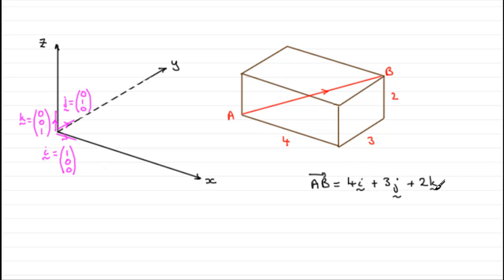Or you could write it as a column vector, just simply as four, three, two.